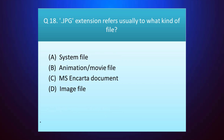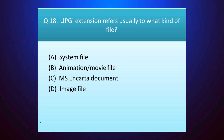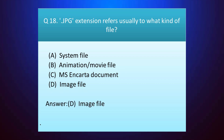Question number eighteen: .jpg extension refers usually to what kind of file? Your time starts. The answer is option D — image file. Question number nineteen: in computer jargon, RAM refers to — your time starts.